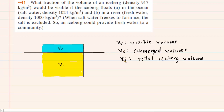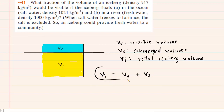V sub I is the total volume of the iceberg. It's important to notice that V sub I, the total iceberg volume, equals the visible volume V sub V plus the submerged volume V sub S. This is a key equation that we'll return to later in solving this problem.